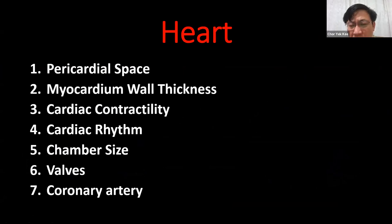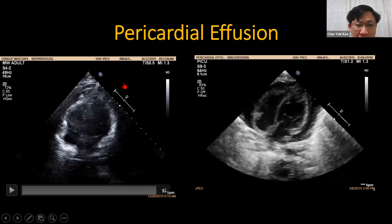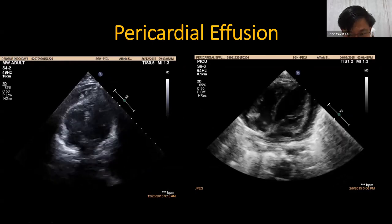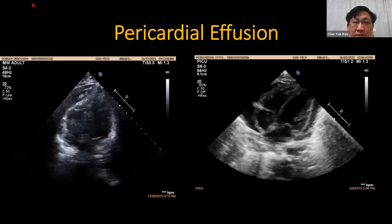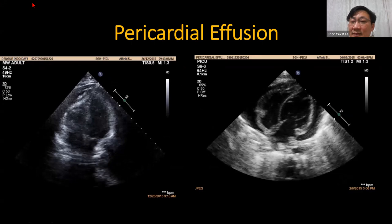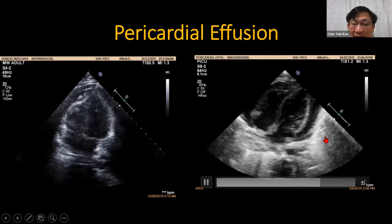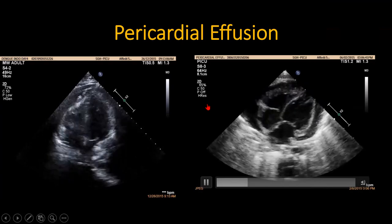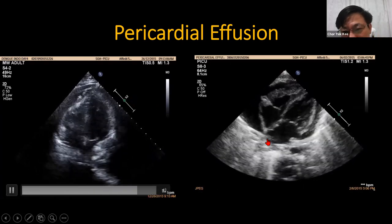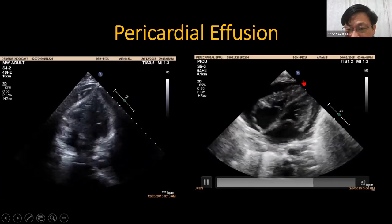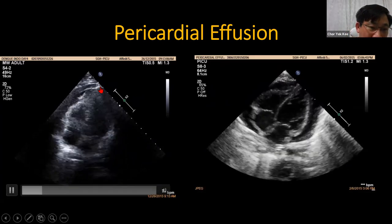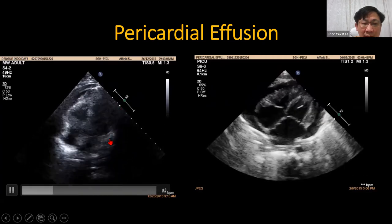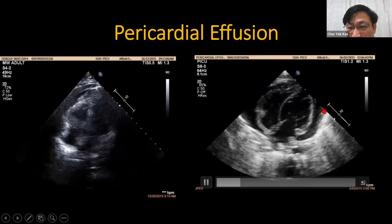After knowing the basic views of echo, let's go through some common clinical scenarios. This first clip — anyone want to guess what the image shows? The answer is pericardial effusion. You can see a clear pericardial effusion with some fibrin inside — this is a pericardial empyema, meaning there is pus around the heart.